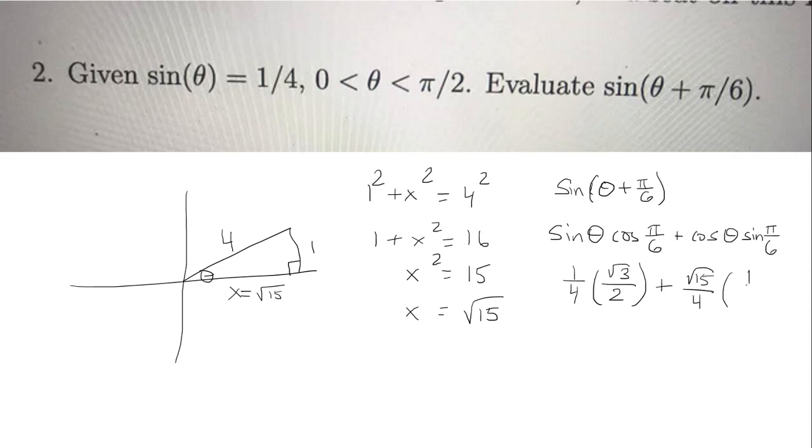And then sine of π/6 is 1/2. We're going to simplify so we have √3/8 plus √15/8. They have the same common denominator so we're going to have that as 8. And the numerator will just be √3 plus √15. And this is our final answer.